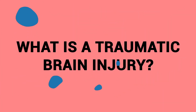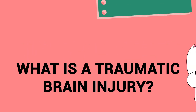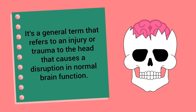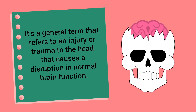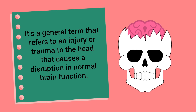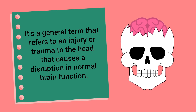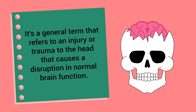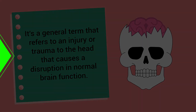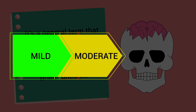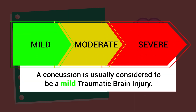What is a traumatic brain injury? It's a general term that refers to an injury or trauma to the head that causes a disruption in normal brain function. Symptoms can be mild, moderate, or severe. For example, a concussion is usually considered to be a mild traumatic brain injury.